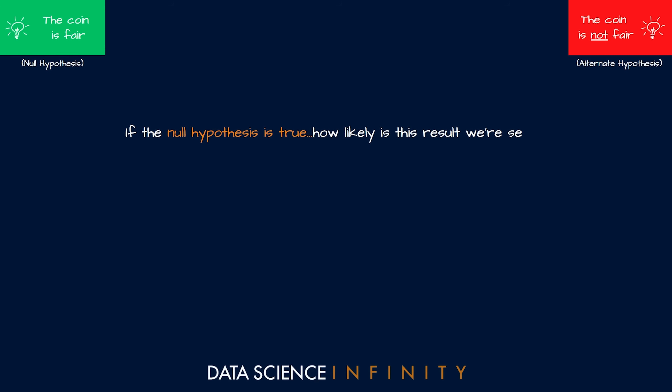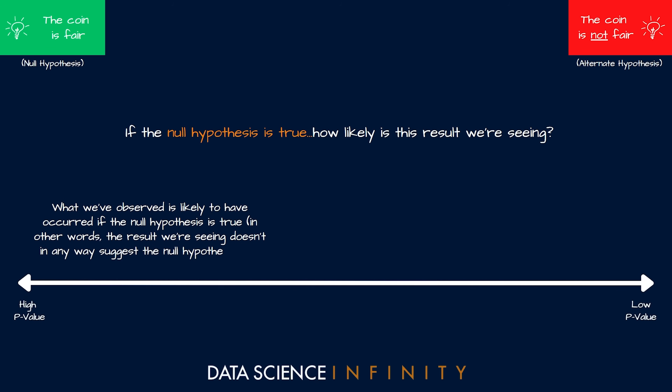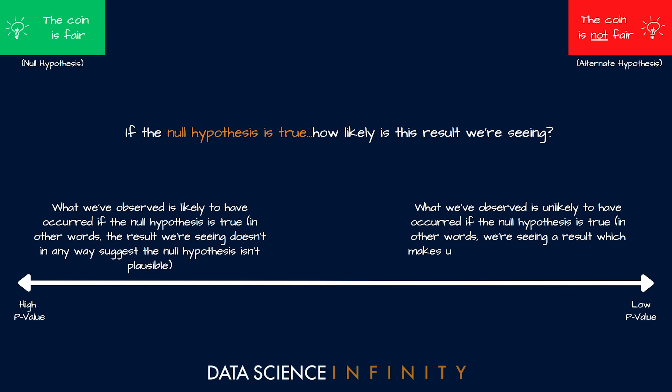A p-value is saying: if the null hypothesis is true, how likely is this result that we're seeing? If we see a high p-value, what we've observed is likely to have occurred if the null hypothesis is true — the result doesn't suggest that the null hypothesis isn't plausible. This is essentially what we saw when Pete rolled one head: nothing about that scenario gives us evidence to doubt the null hypothesis.